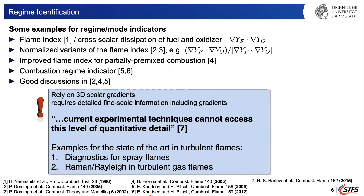All of these regime indicators rely on 3D scalar gradients, meaning we require detailed fine-scale information including gradients locally — not just from a single scalar. As Barlow pointed out in 2015 quite clearly: current experimental techniques cannot access this level of quantitative detail, meaning 3D gradients of multiple scalars.